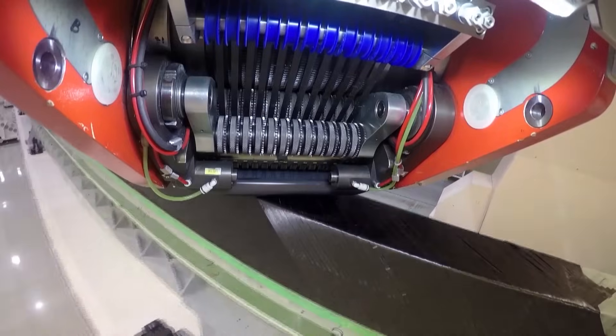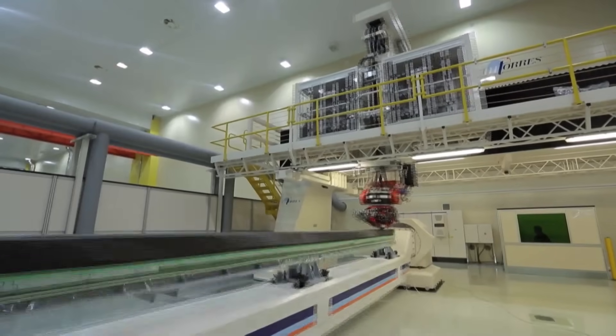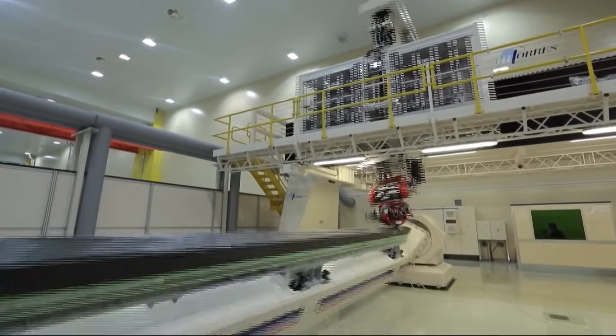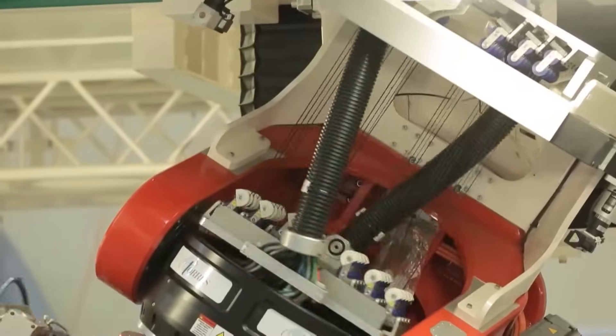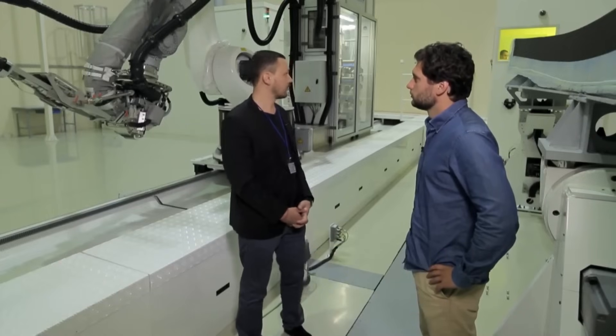Creation of wing parts begins when a machine lays a composite filament according to a preset program. The number of layers may reach 90. The most difficult thing at this stage is software. It is still being debugged and improved. As to the rest, it's a normal, undemanding machine. It works three shifts like a dog.